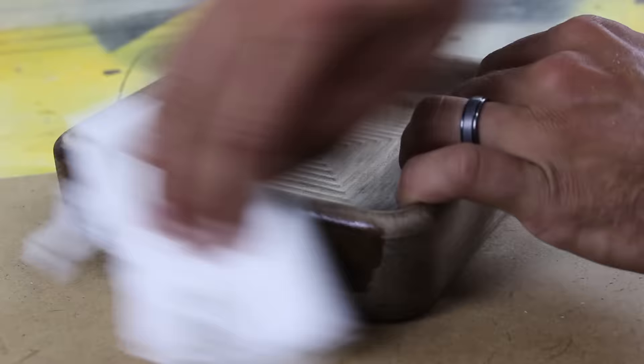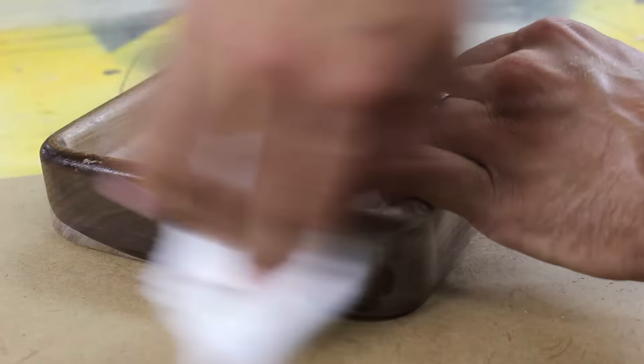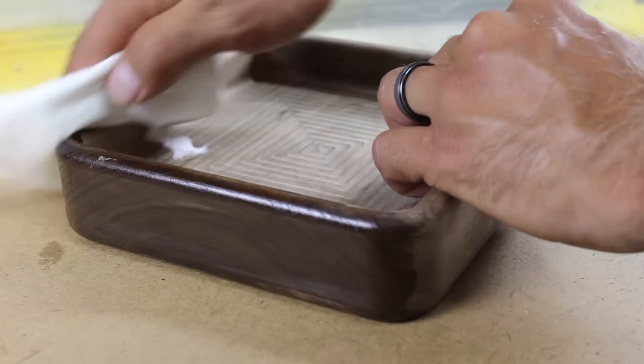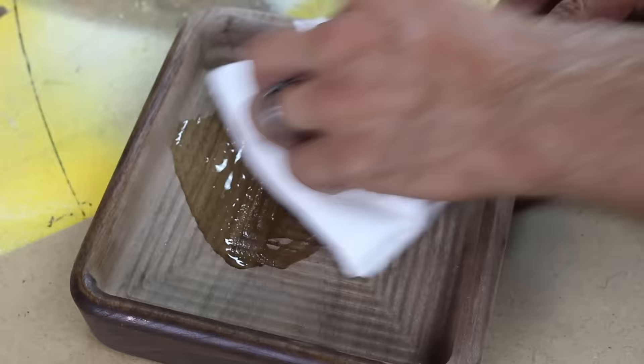I applied the mineral oil with a regular paper towel. The wood is thirsty so plan on applying a few coats and wiping off the excess. When it came to the inside I elected just to pour a bit in there and rub it around.